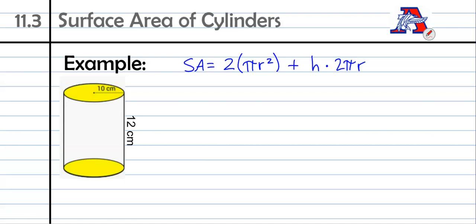So the things that we need for our formula is really we just need the radius and the height, which we have. So that becomes really nice. Our radius is 10 centimeters, and our height is this 12 centimeters right here.